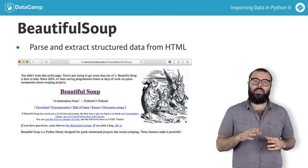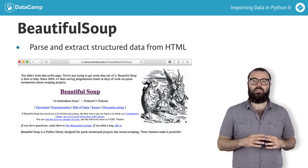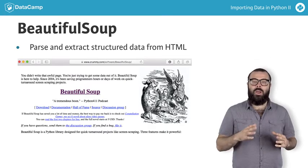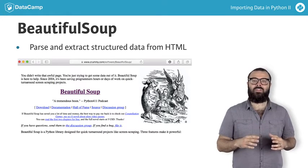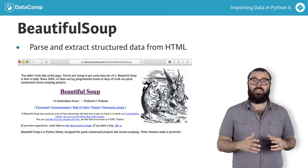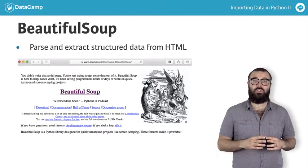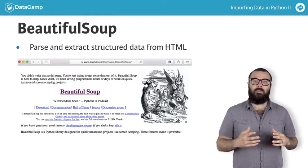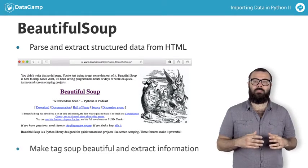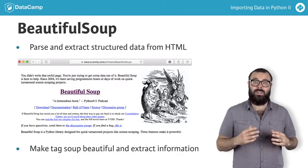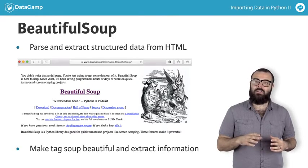Firstly, a word on the name of the package — Beautiful Soup. In web development, the term Tag Soup refers to structurally or syntactically incorrect HTML code written for a web page. What Beautiful Soup does best is to make Tag Soup beautiful again, and to extract information from it with ease.